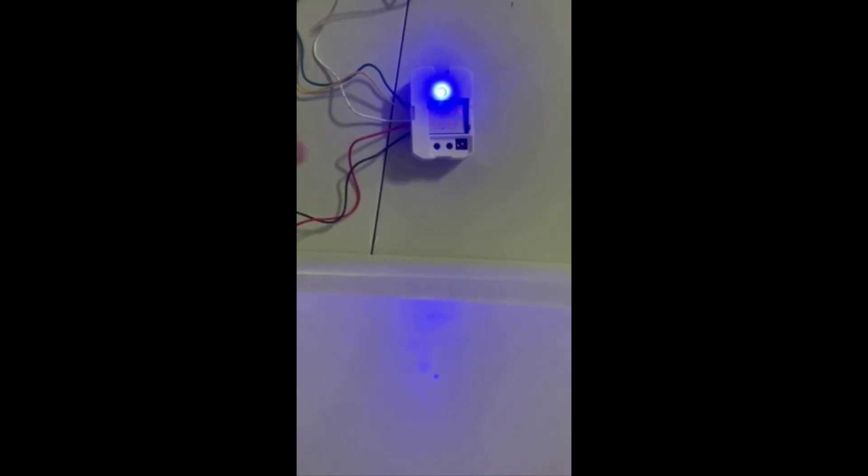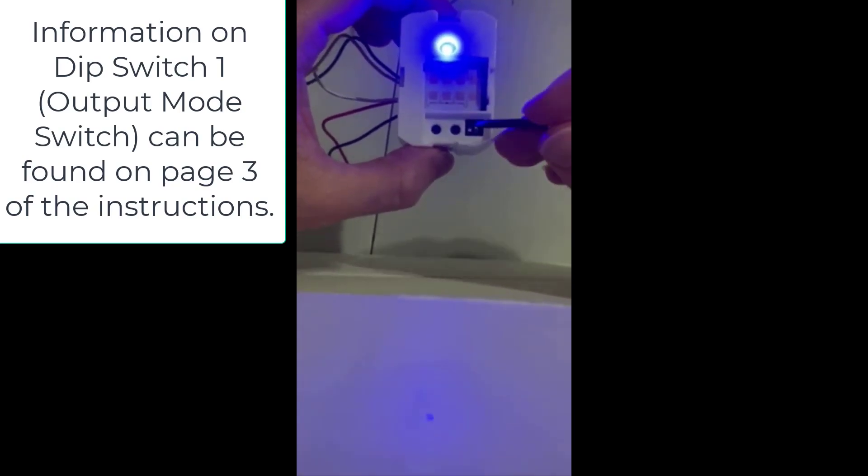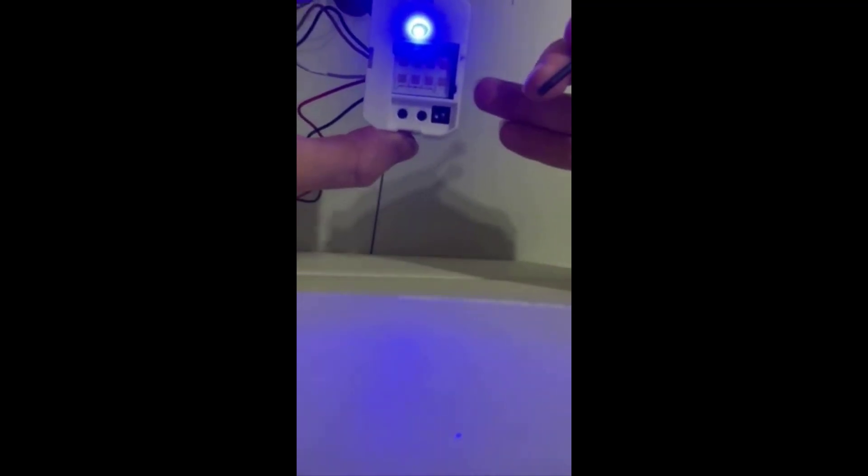Another thing to look at is actually down here with the dip switches. So we have two dip switches here and this one on the left, the factory default is that it's actually set down and that's actually in what we call timer mode.